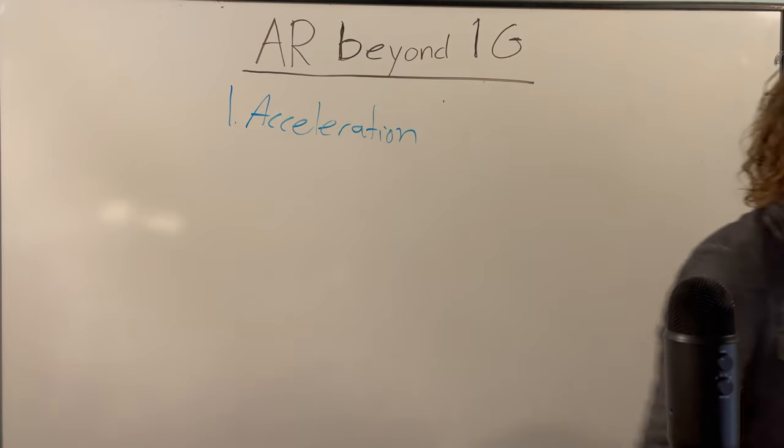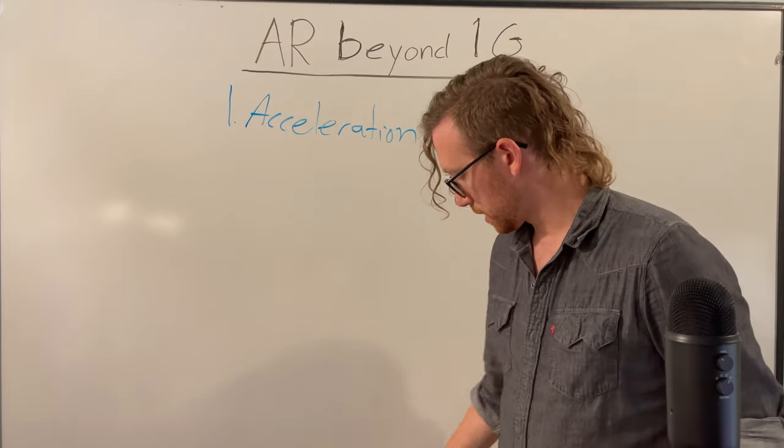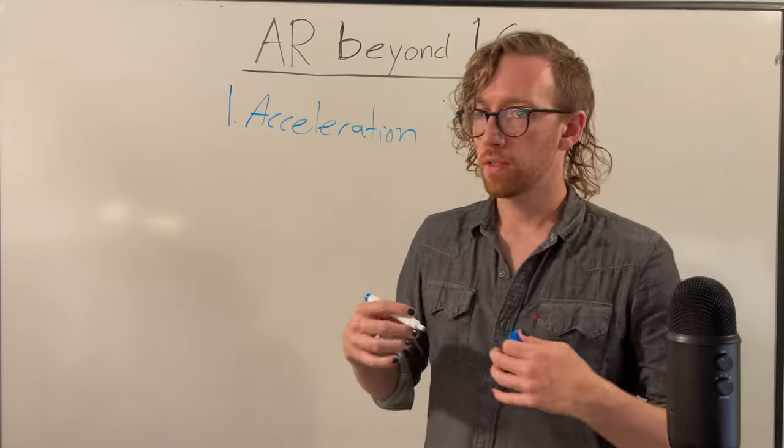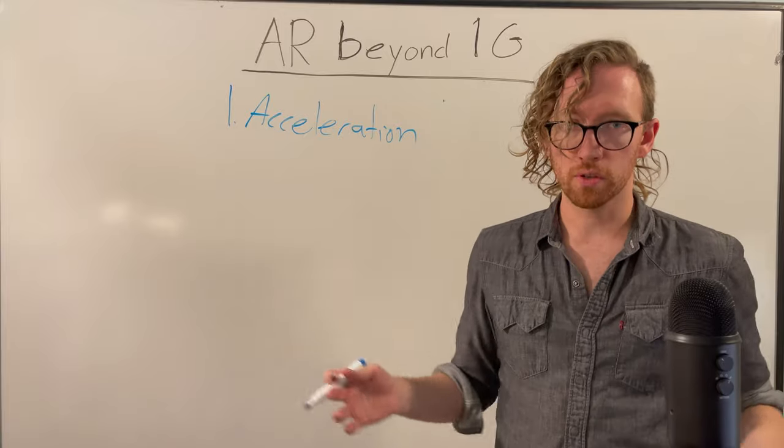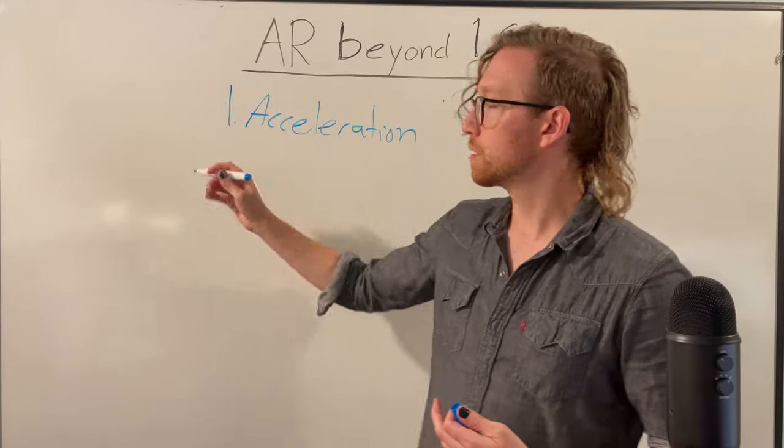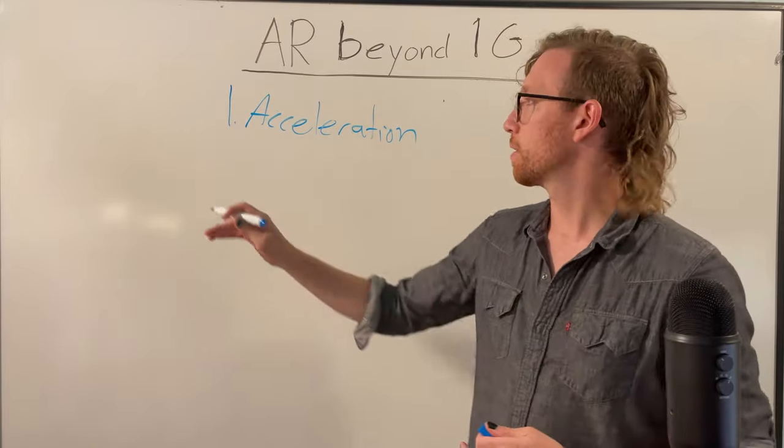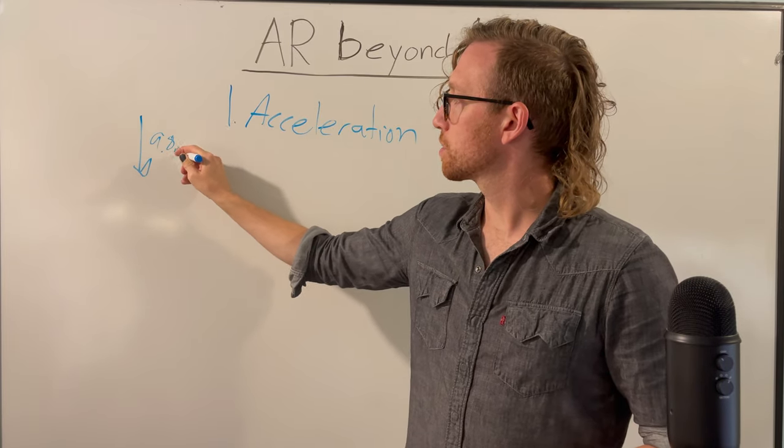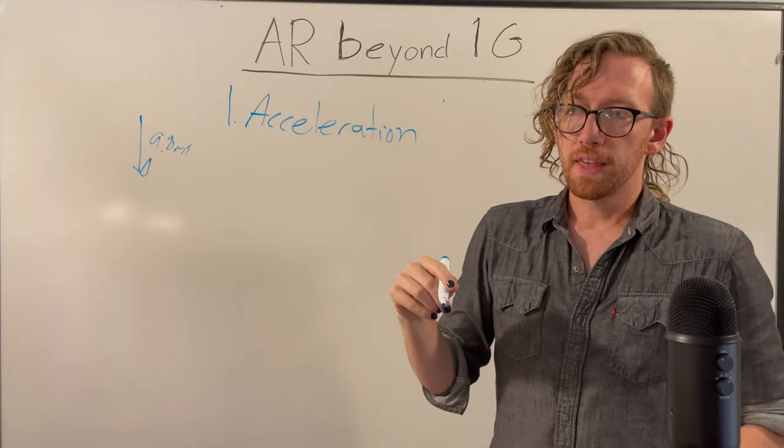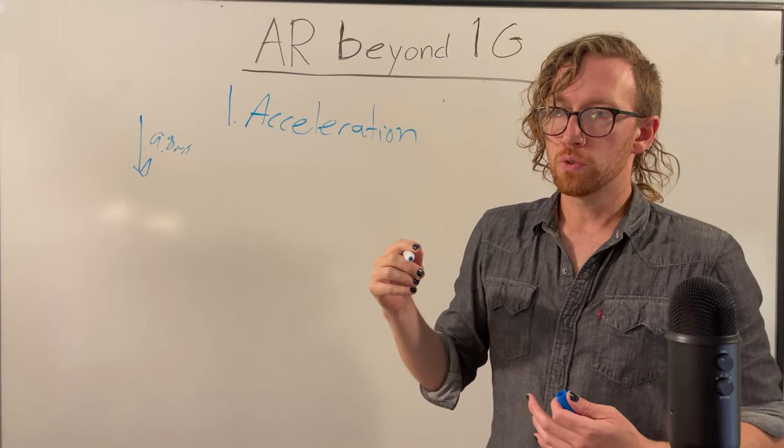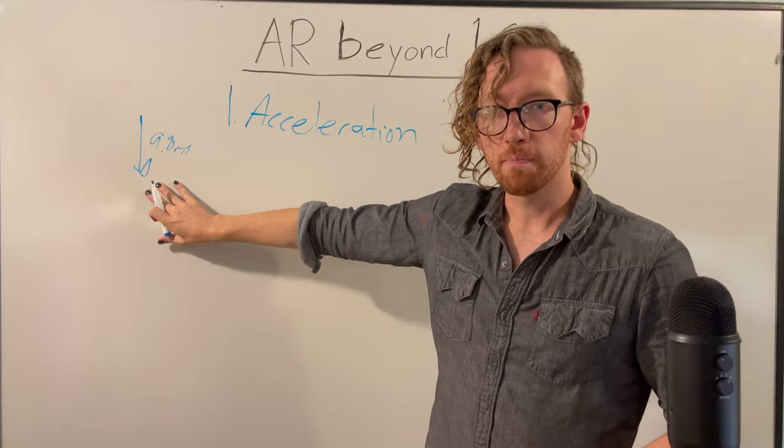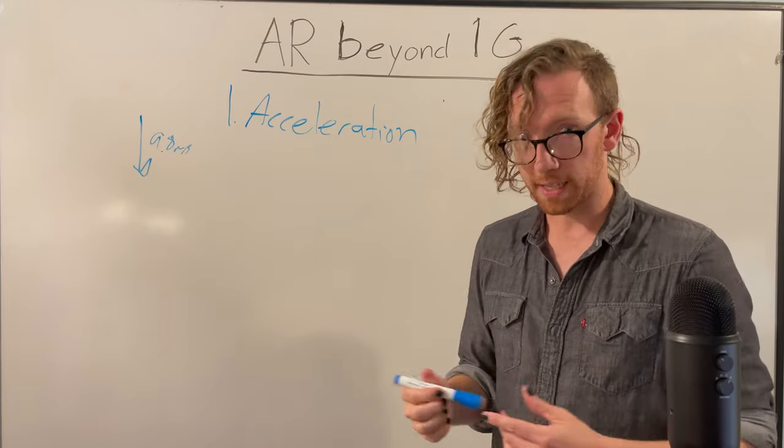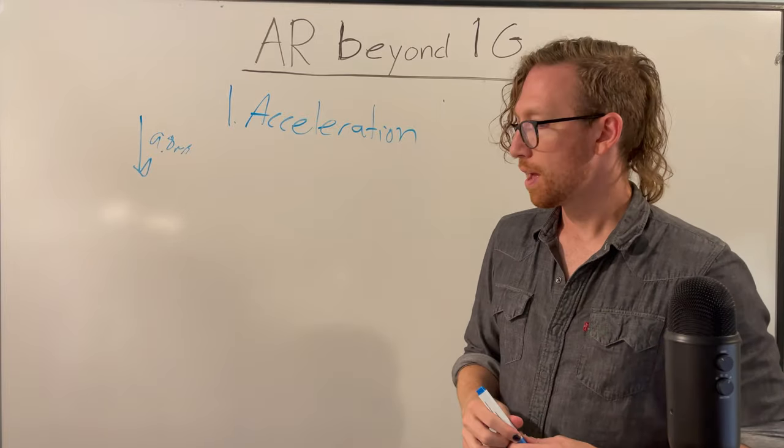So since it's acceleration that these devices are sensing, you can imagine that with almost all uses, you're using them in a stationary ground position. So you have this big 9.8 meters per second squared that we have to say is baseline. And so the device is always feeling that and it says, oh, I'm accelerating 9.8 meters per second squared. I guess I'm holding still.